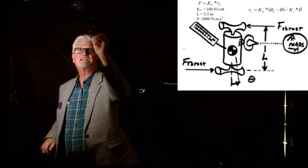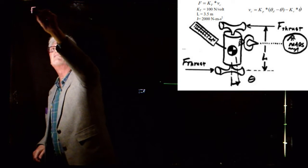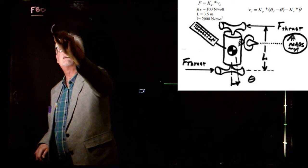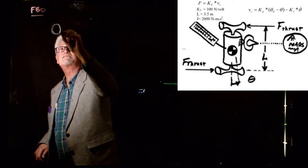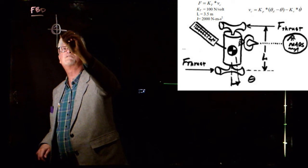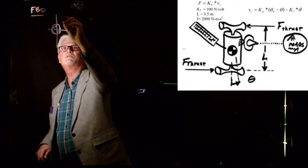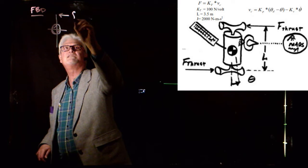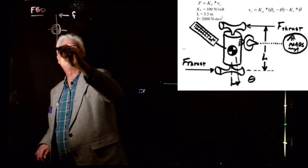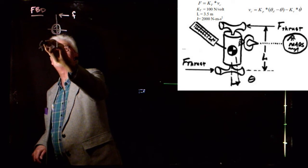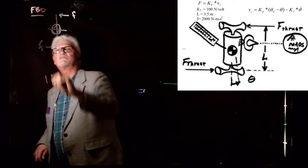The first thing we're going to do is draw a free body diagram of the satellite, and the free body diagram of the satellite looks something like this. What we're going to do is we have a force F here, and then another force from the thruster here — F, that's the thruster force.